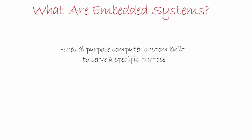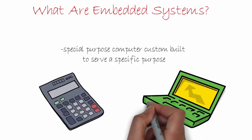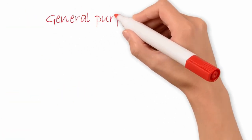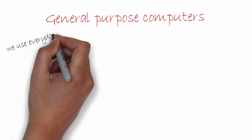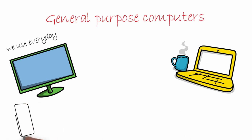For example, a calculator is a special purpose computer as compared to a laptop. So what are special purpose computers? To understand that, let's first look at the other end of the spectrum, which is general purpose computers. General purpose computers are those that we use every day, like our desktops, laptops, and Macs.